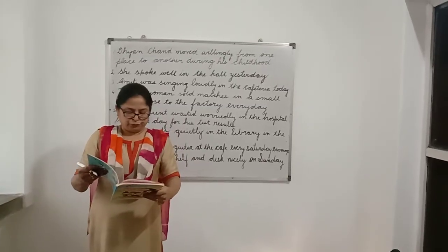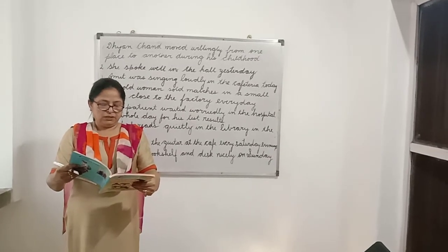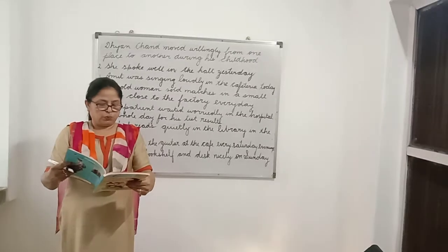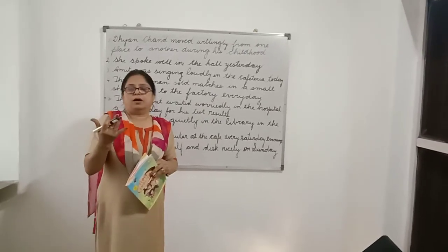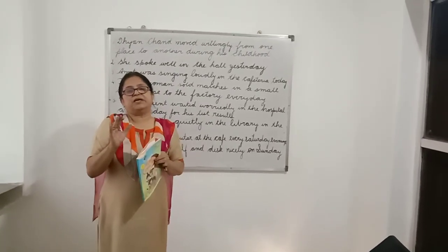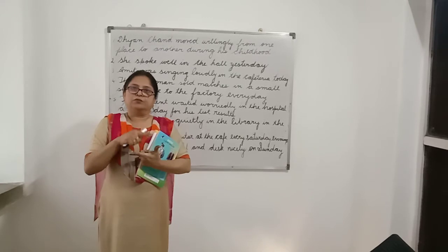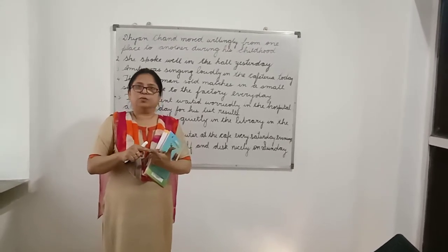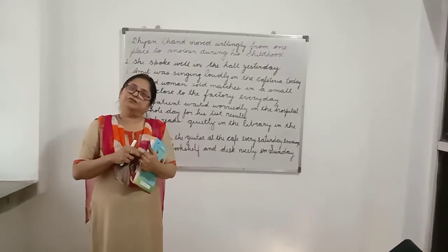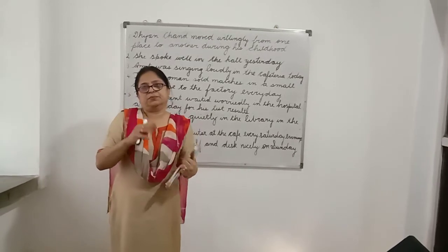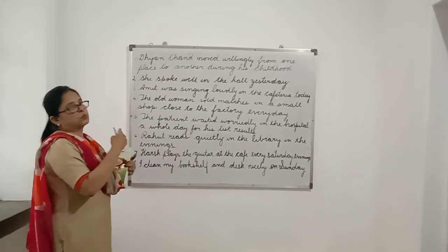Now let's come to Roman numeral 4 on page number 84: place the adverbs provided in the bracket in order to complete the sentence. Children, whenever there is more than one adverb in a sentence, they have to be placed in a particular order. First we have adverb of manner, then comes adverb of place, then comes adverb of frequency, and at the end we have adverb of time. So we have to keep this order in mind. Please look on the whiteboard here, and I am going to read out all the sentences the way they have to be framed.